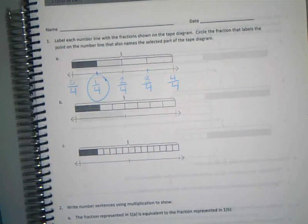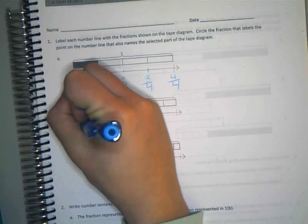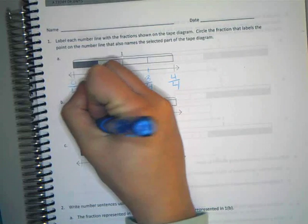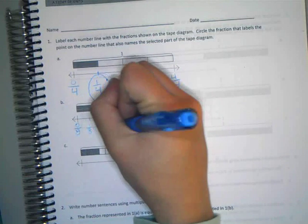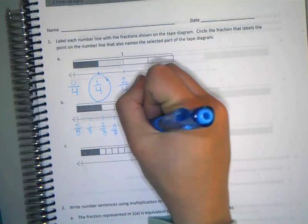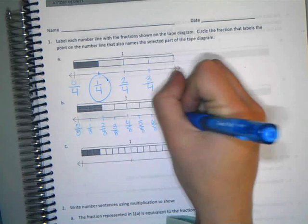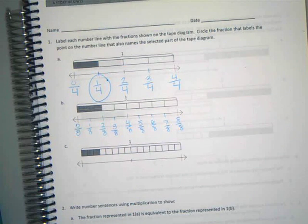Alright, not so bad so far, right? Alright, B. What are we looking at there? Four, five, six, seven, so what do we think? L? Eighths. Eighths. Do you guys agree? Yeah. Alright, go ahead and label your eighths. So you're going to have to draw some of your lines then. Just follow their lines.